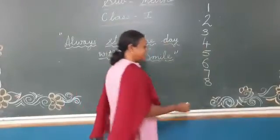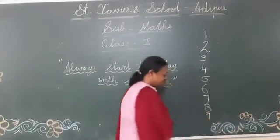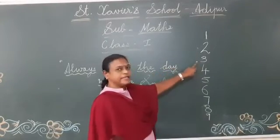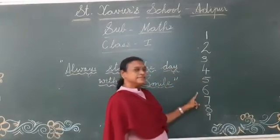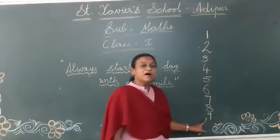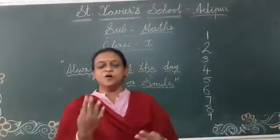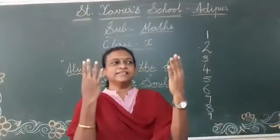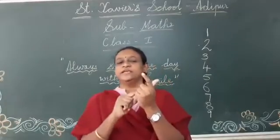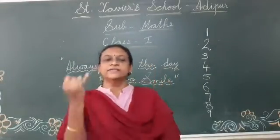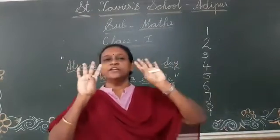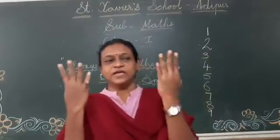Now, which number comes after 8? That is 9. Okay? Count again: 1, 2, 3, 4, 5, 6, 7, 8, 9. Now, count the fingers. 9. Come on. Show your fingers like this. 1, 2, 3, 4, 5, 6, 7, 8, 9. Now, how many total fingers? 9. Okay?